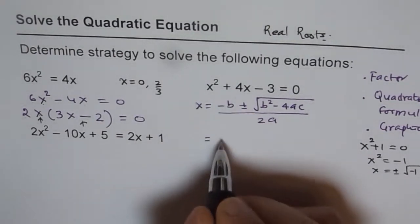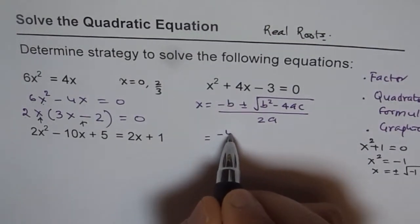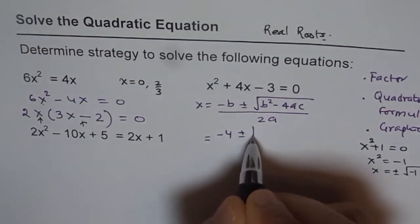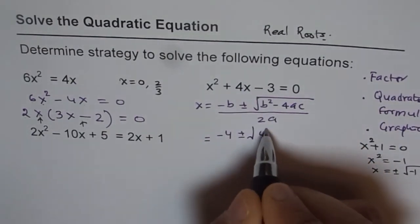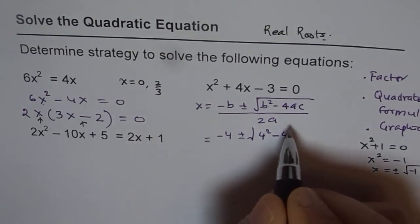So minus of b, that means minus of 4, that gives me -4, plus minus square root of b², which is 4². 4² minus 4 times a is 1,